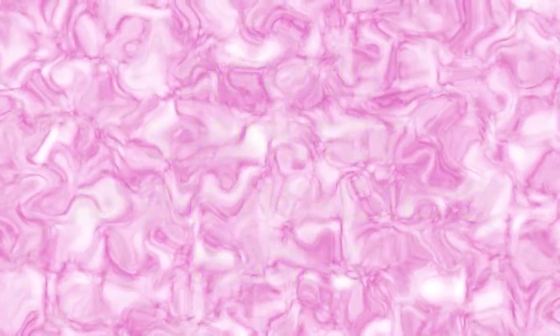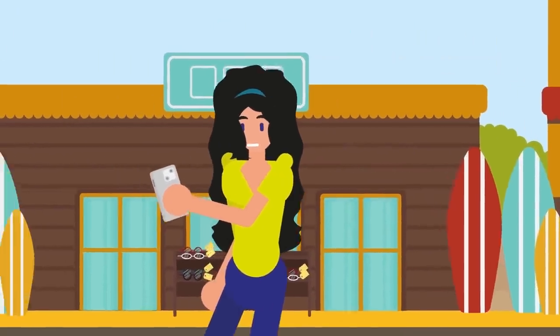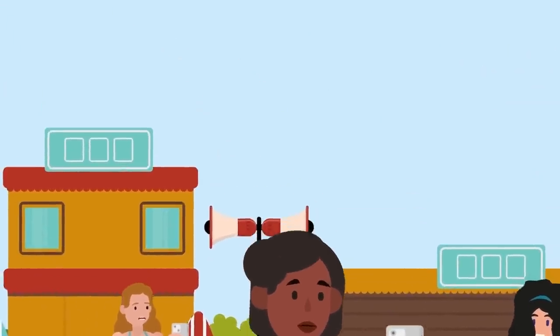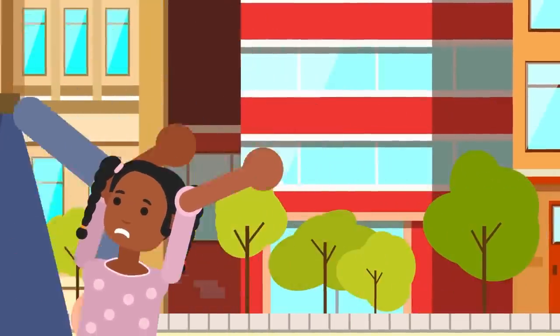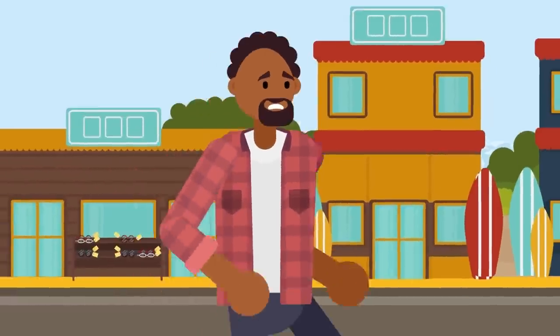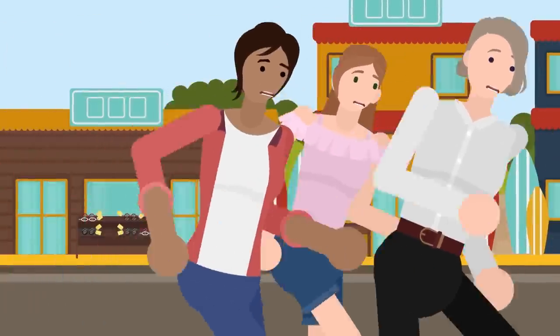8:07 AM, two minutes after the crisis begins. Every cell phone around the islands of Hawaii receives the same message: Ballistic missiles are inbound. The moment people read the news, chaos breaks out. Tourists run for their hotel rooms. Residents start making plans to reach the nearest shelter. A mix of confusion and terror fills the island.